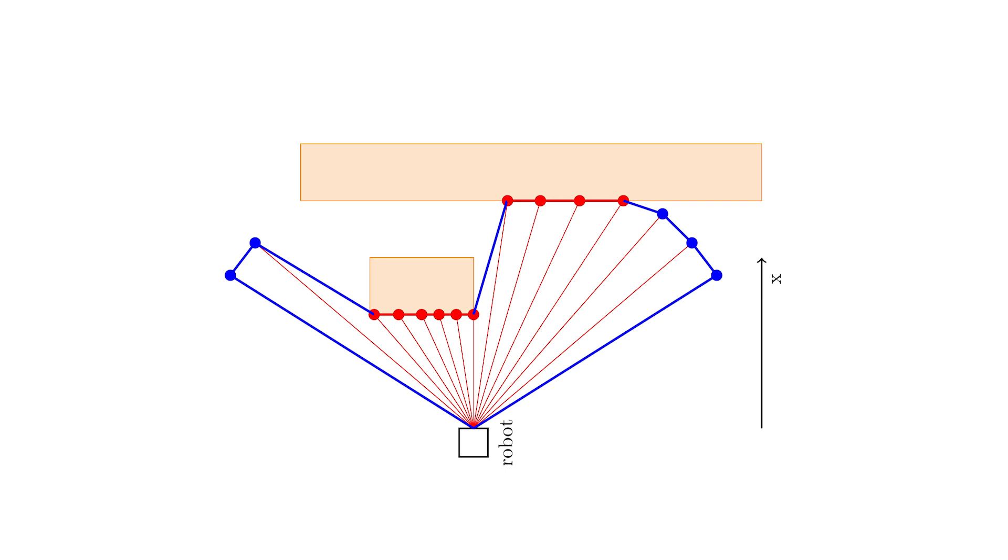Depth samples are labeled as either frontier samples, if they exceed the sensor range, or as obstacle samples, if they hit an obstacle.